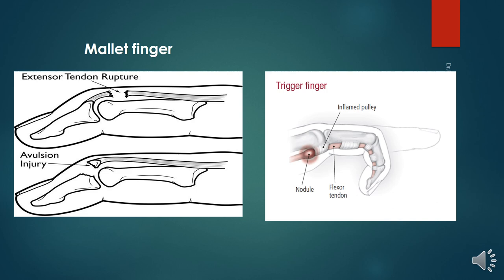Trigger finger (stenosing tenosynovitis) presents with finger stiffness in the morning, popping or clicking, tenderness or a nodule at the base of the affected finger, and catching or locking in a bent position. The flexor tendon sheath is affected when inflammation narrows the space within the sheath, interfering with normal gliding motion. As a result, the fingers get locked in flexion and extend only with excessive voluntary effort.